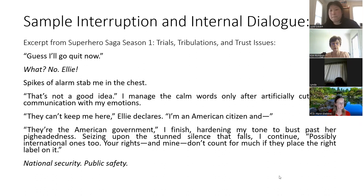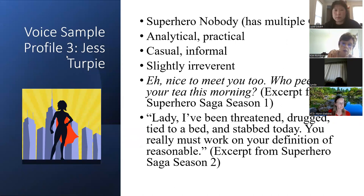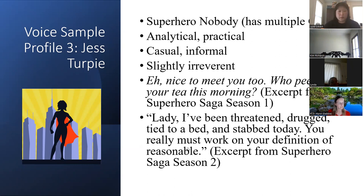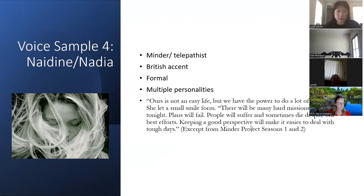This is more of an example of Jess — she's the character in that last example. She has multiple gifts, she's analytical, practical, but her style is casual and informal. She's also slightly irreverent. Some lines from her: 'Nice to meet you too — who peed in your tea this morning?' Or one of my favorite excerpts: 'Lady, I've been threatened, drugged, tied to a bed, and stabbed today. You really must work on your definition of reasonable.' It sounds a whole lot better when the narrator does it — but the point is these lines indicate a lot more informality and irreverence than formality or sophistication. And this is an example from Nadine — you can read that later.